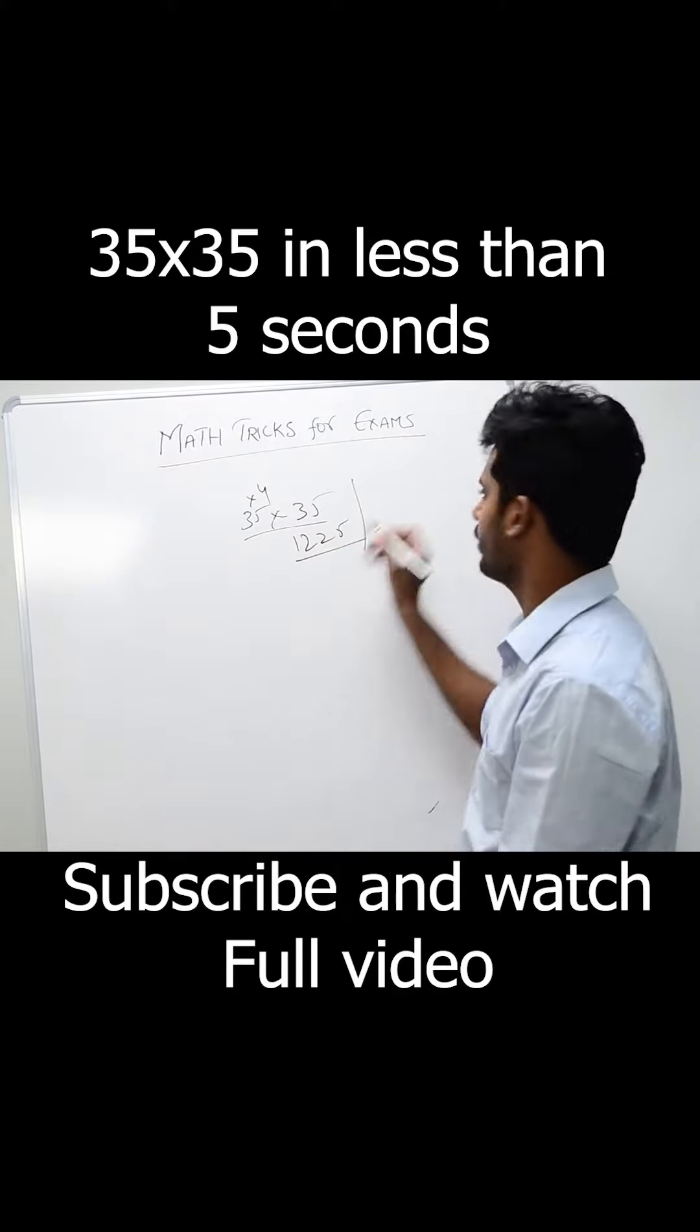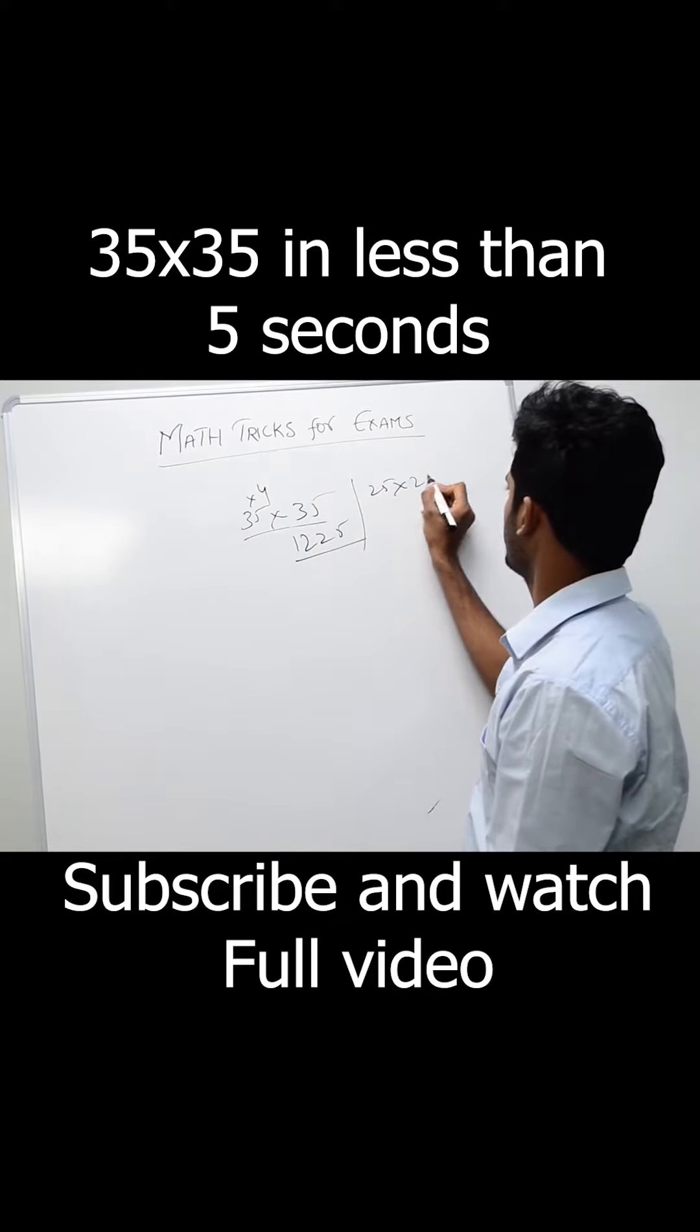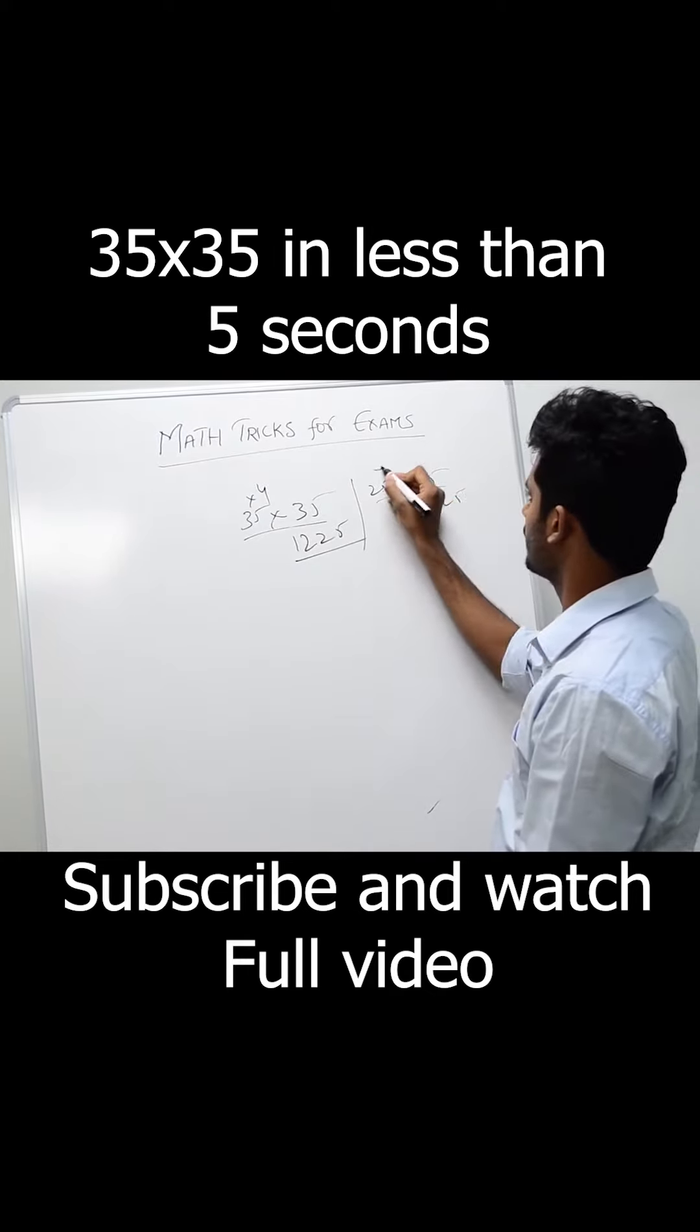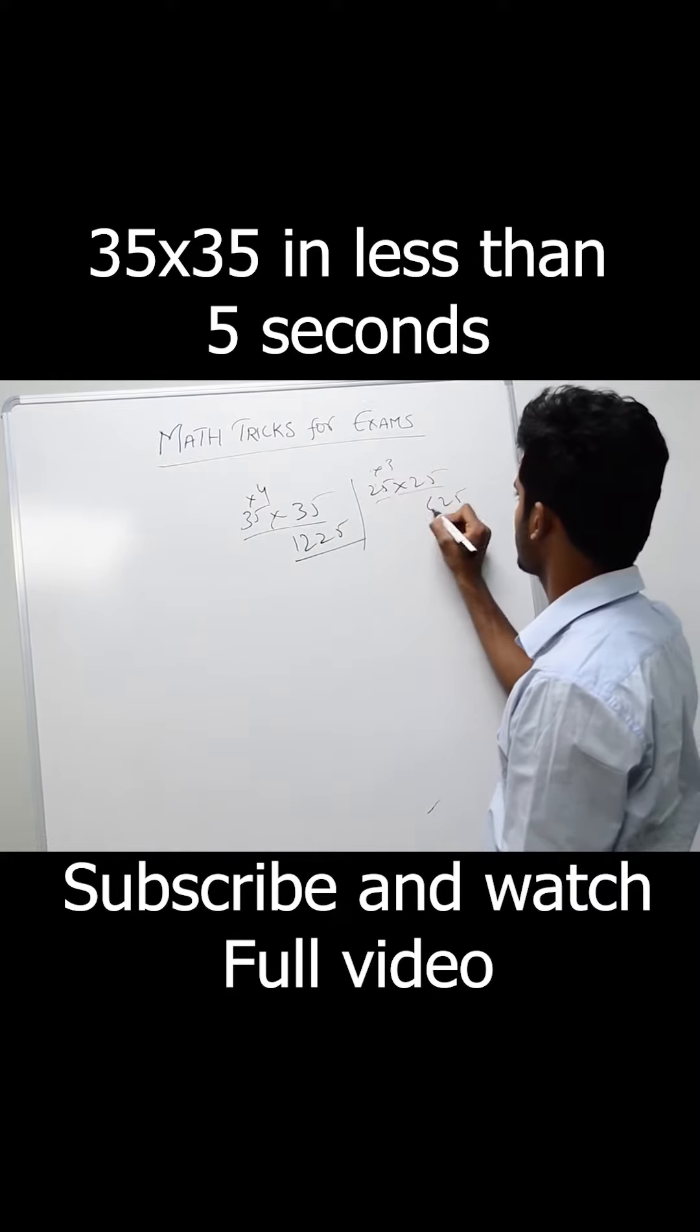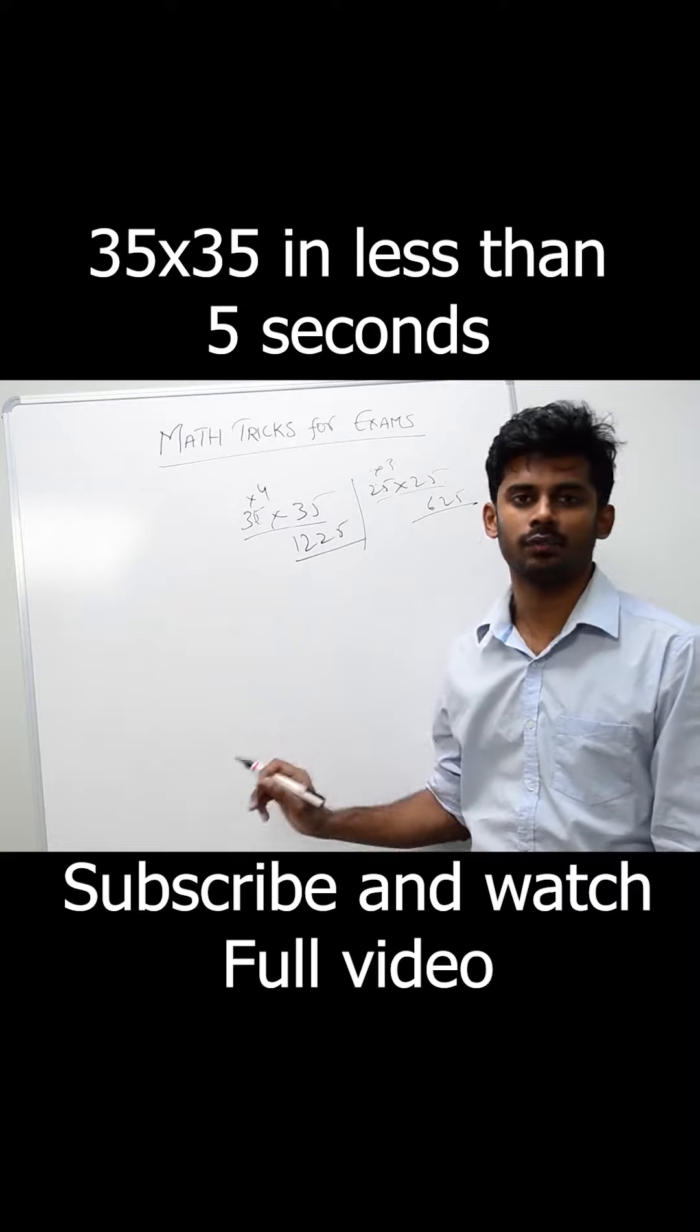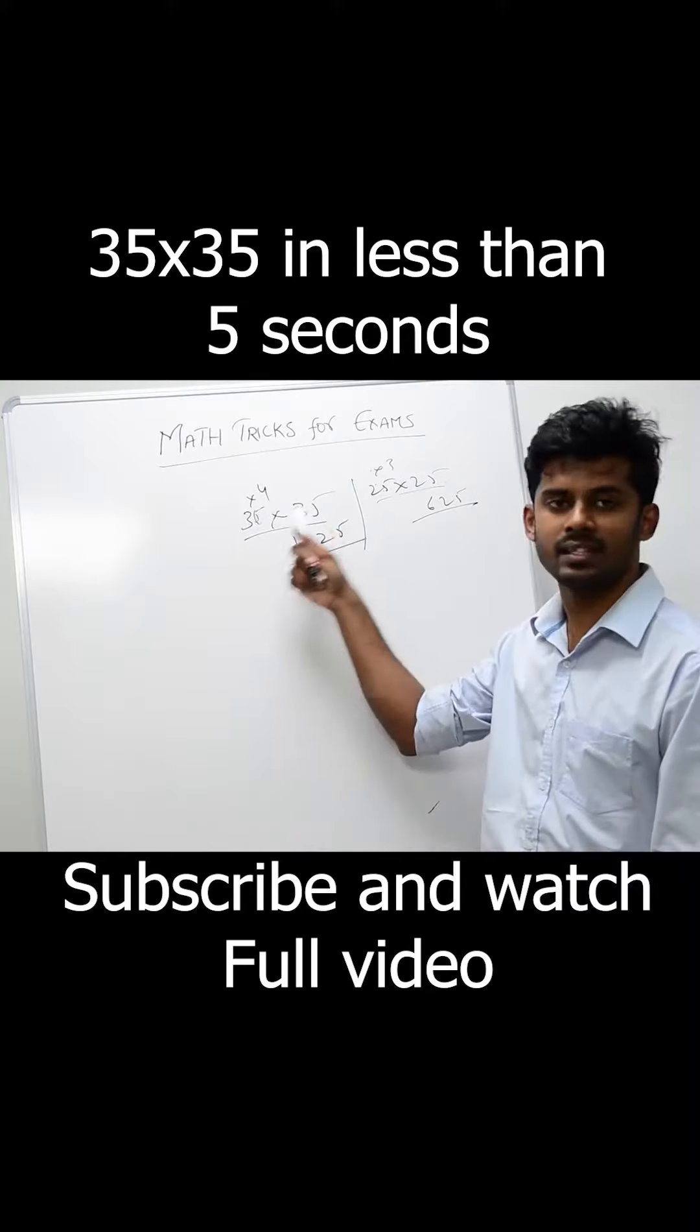If you want to know 25 times 25: 5 times 5 is 25, and 2 times the next number, which is 3, equals 6. So 625. That's simple. This trick actually works with the same number which ends with 5.